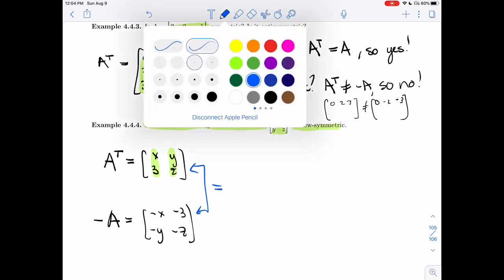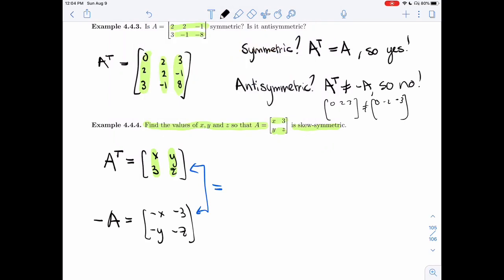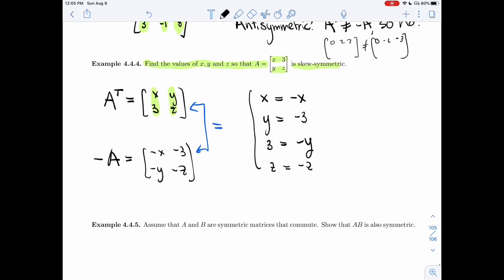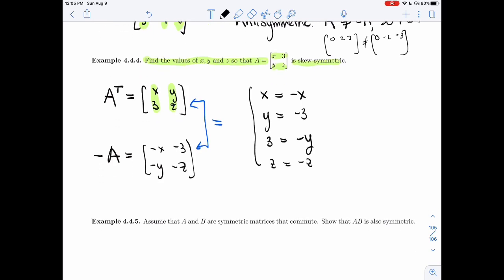They're the same size. So all we have to worry about are the entries. So I need the first entries to be equal. And then Y should be minus 3, 3 should be minus Y, and Z should be minus Z. So all four of these equations should be true at the same time.